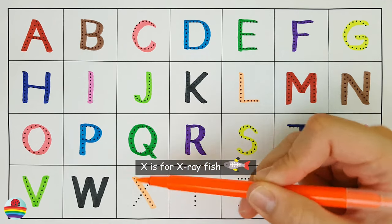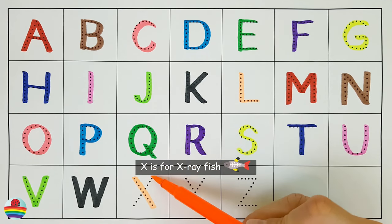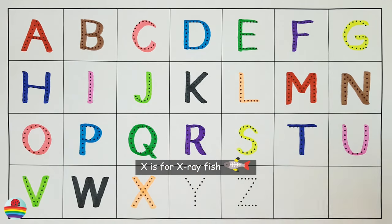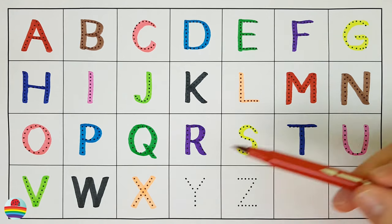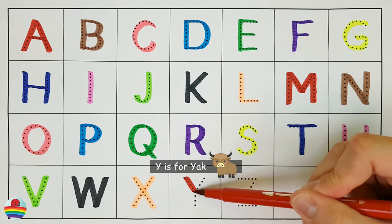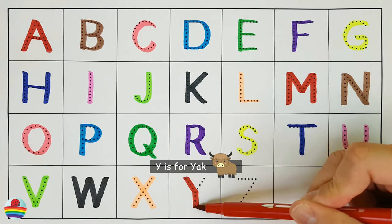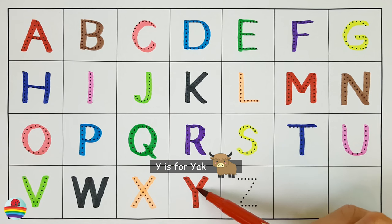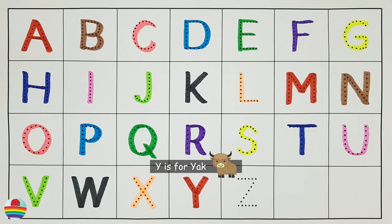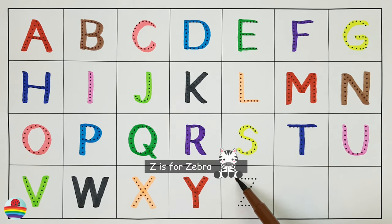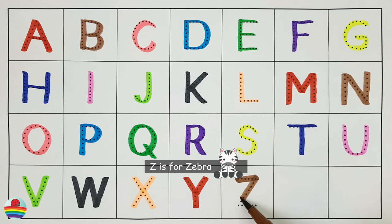X. X is for x-ray fish. X. Y. Y is for yak. Y. Z. Z is for zebra. Z.